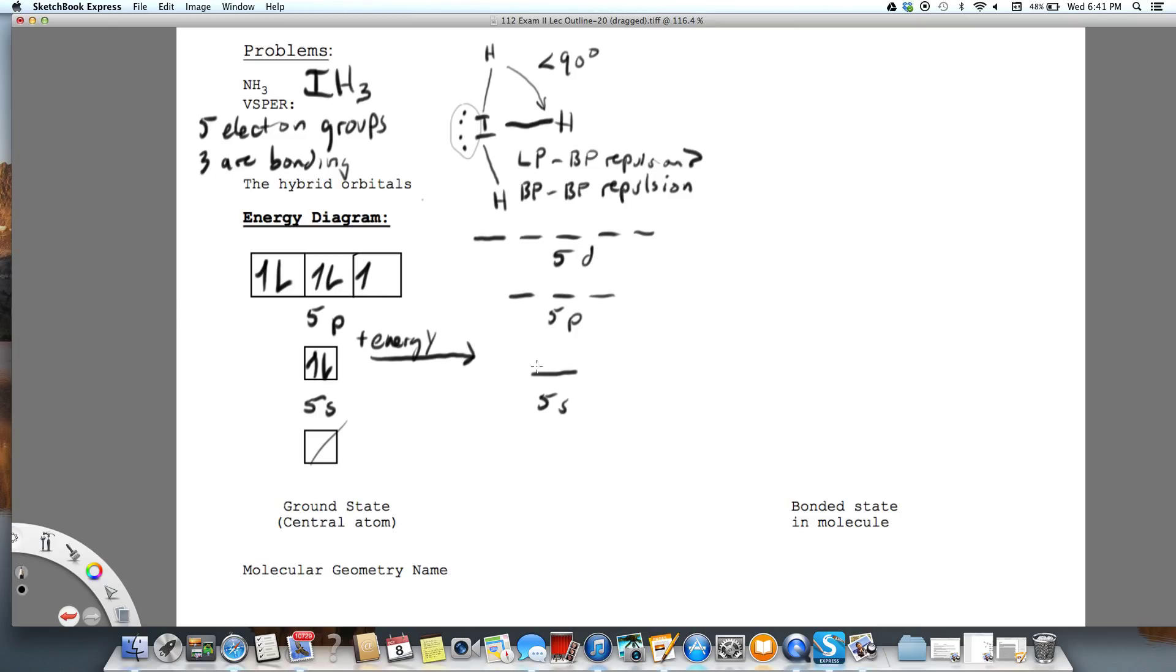All right, so my S stay paired, and again, I need to promote one electron. I promote this one up to here. And that leaves me now with three unpaired electrons, which will go with the hydrogens.